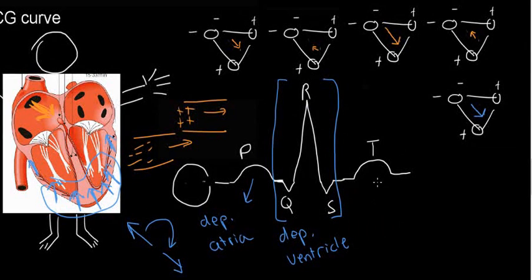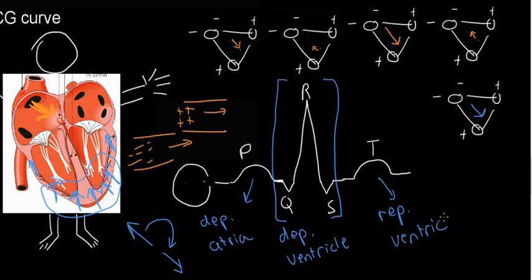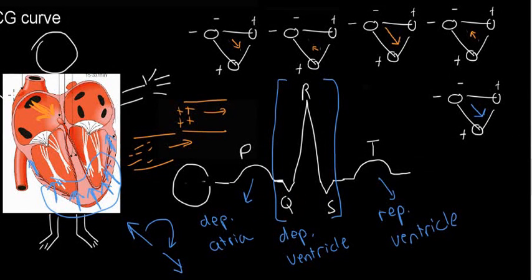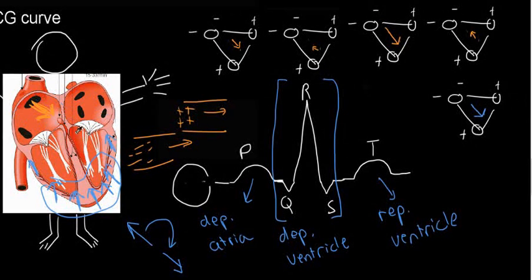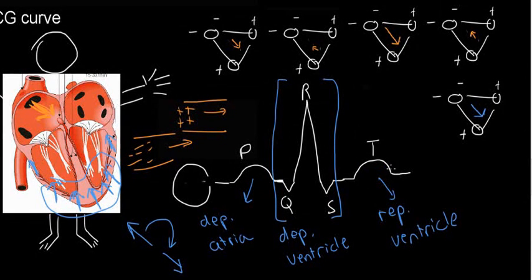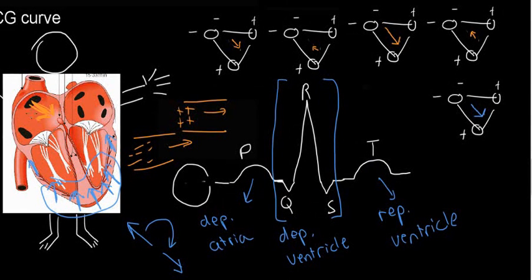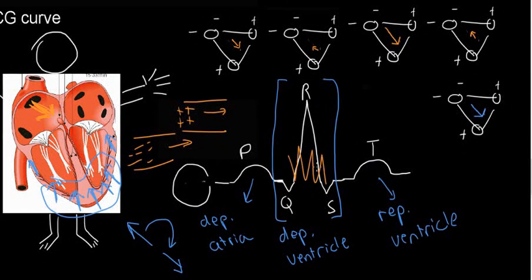And the T — we already know that this means the repolarization of the ventricles. We also mentioned that the depolarization of the atriums traveling in this direction is somewhere here.